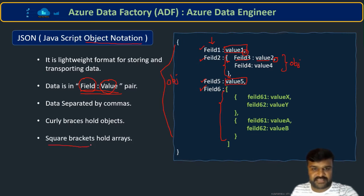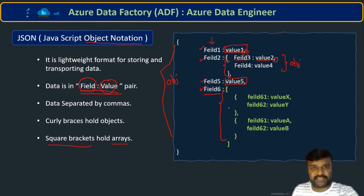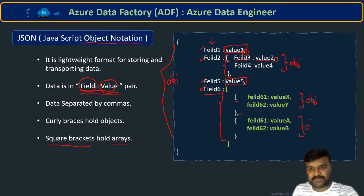Another thing to observe is square brackets. Field 6's value has square brackets — square brackets always represent an array. Inside that array you are going to have objects. So from one curly-brace pair to the closing curly brace is one object, and the next curly-brace pair is another object.